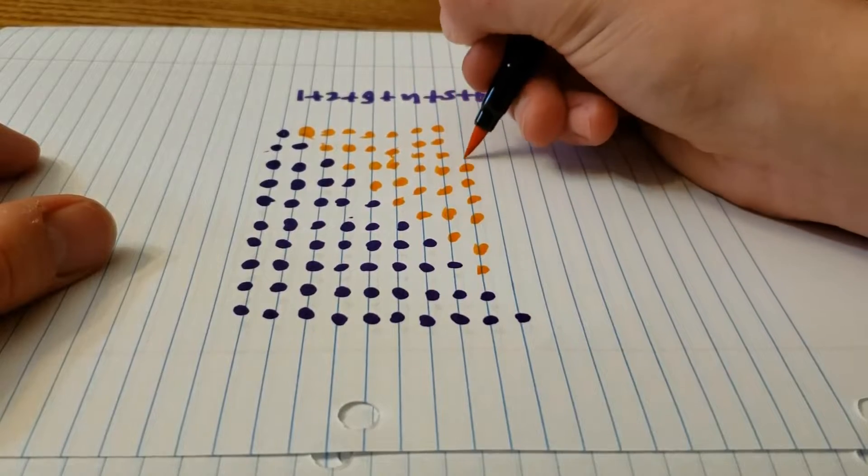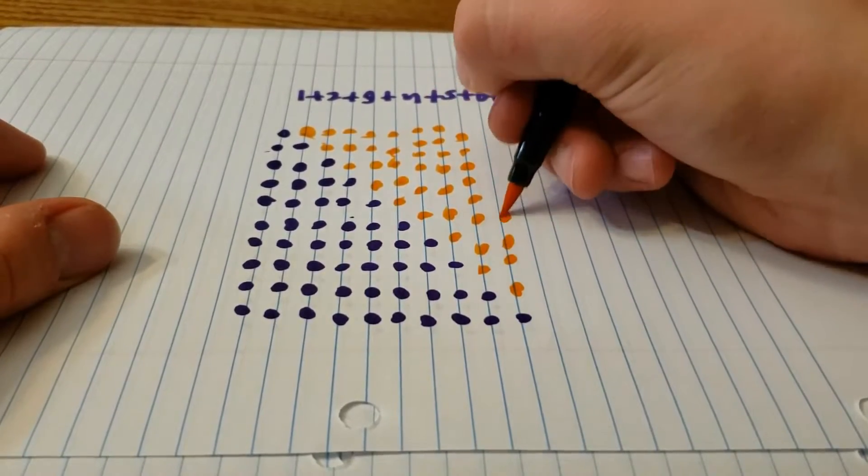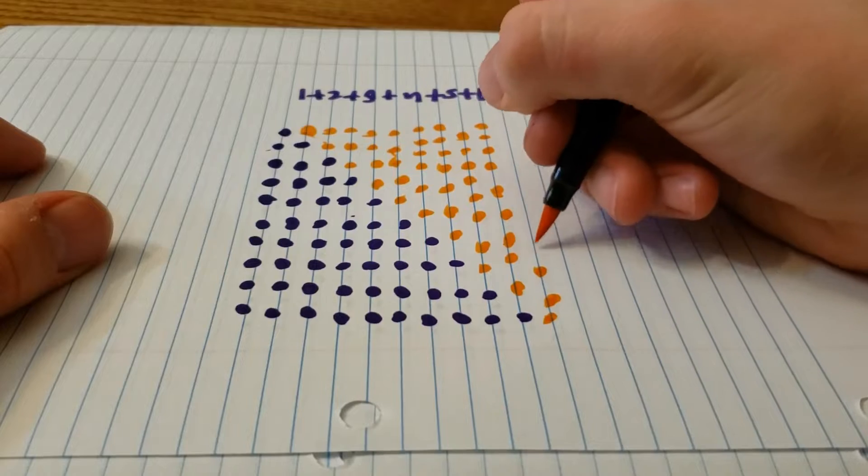From this, you can see the general formula for the sum of the numbers from 1 to n is equal to n times n plus 1 all over 2.